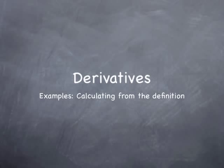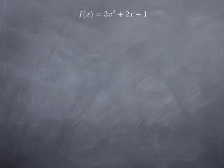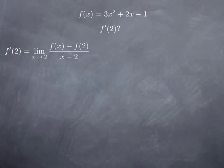Now we're going to go through a number of examples where we calculate the derivatives of some functions starting from the definition. To start, let's consider the function f defined by 3x squared plus 2x minus 1, and let's say we want to find f prime of 2. By definition, f prime of 2 is the limit as x approaches 2 of the difference quotient: f of x minus f of 2, divided by x minus 2.